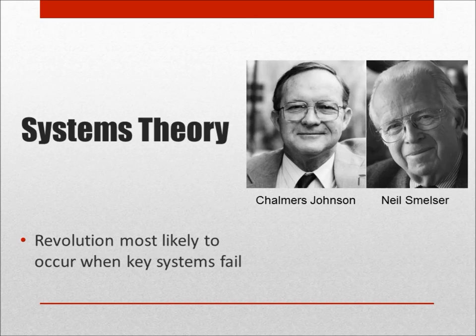His fourth criteria he identified as precipitating factors, which would be events that seem to confirm the calls for revolution. The fifth criteria Smelser identified was the mobilization of participants for revolutionary action, which might result from panic, general hostility, or a more rational and organized effort to lead a revolution. The final criteria Smelser identified was the presence of what he called counter-determinants, which would usually be in the form of police or military action to attempt to repress the emerging insurgency.